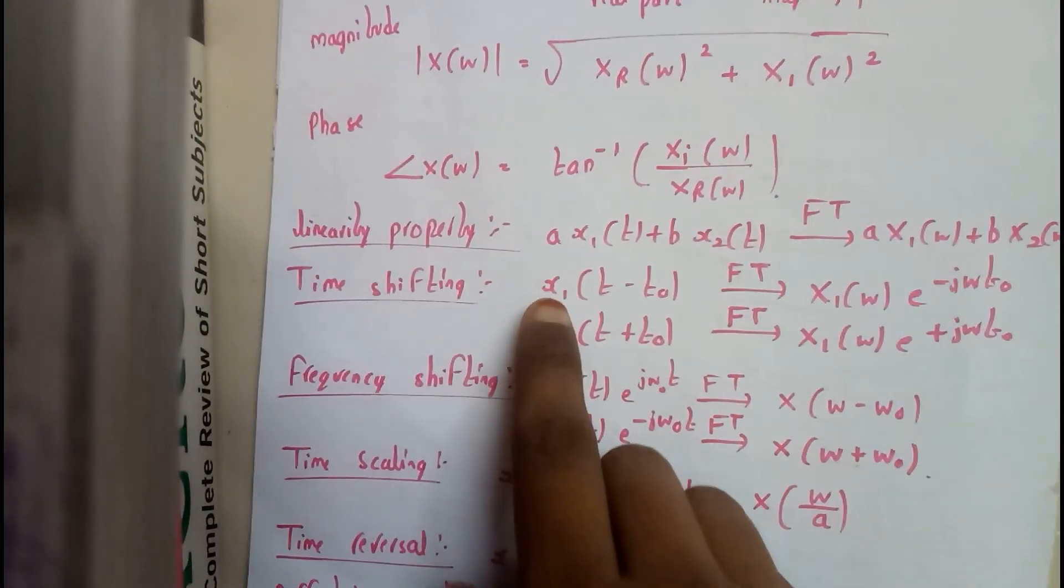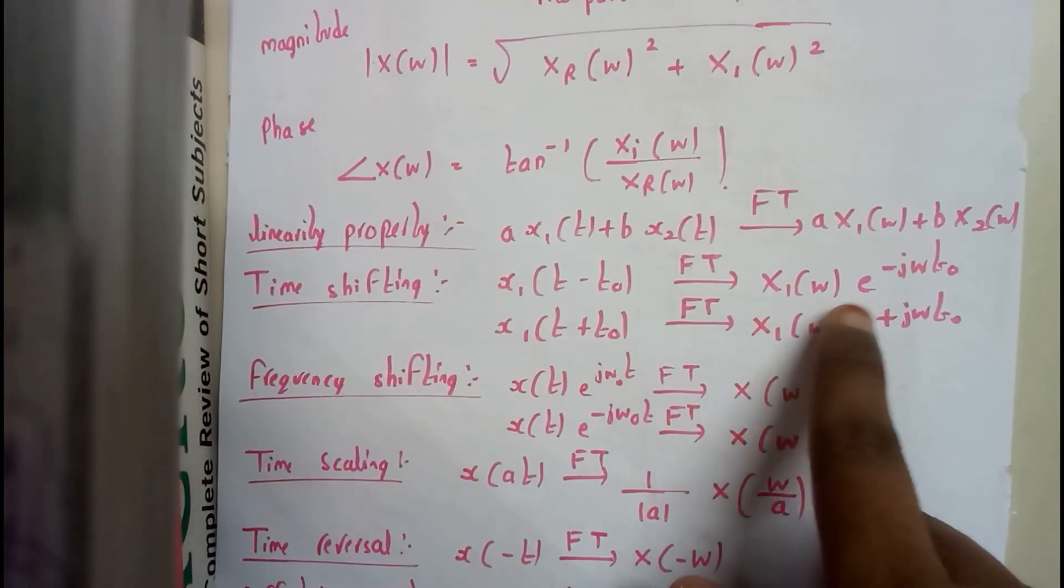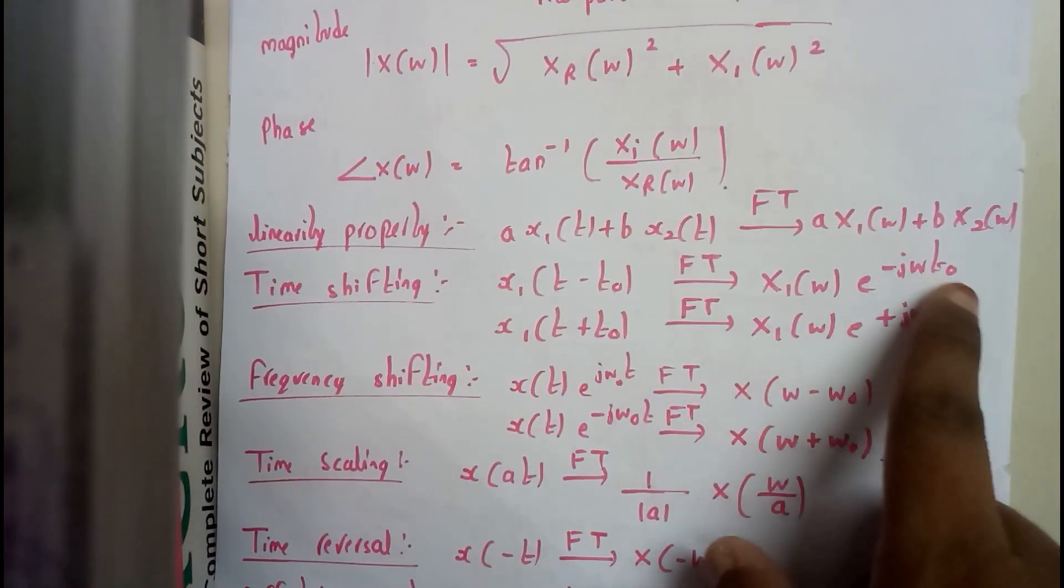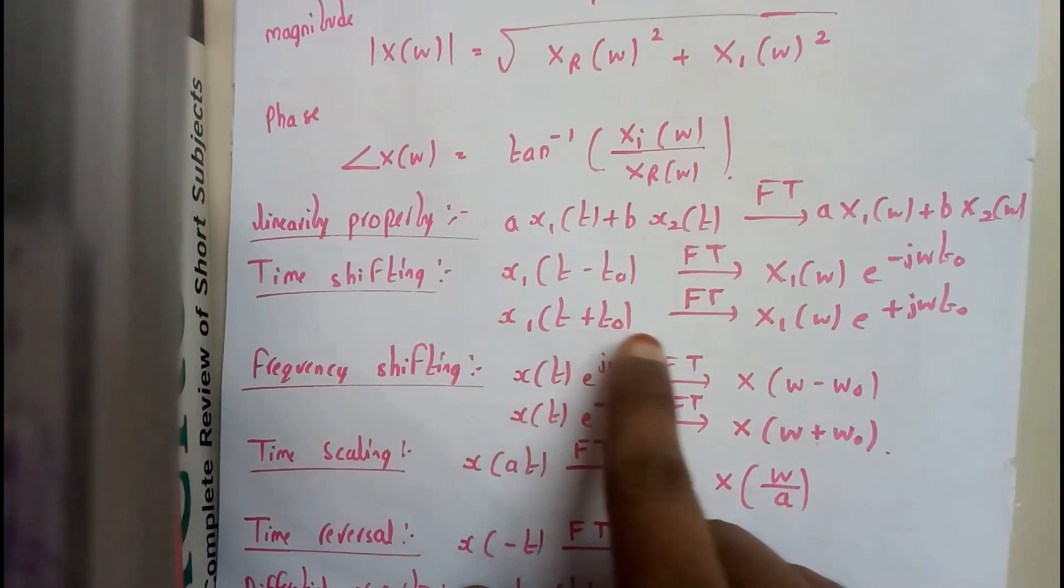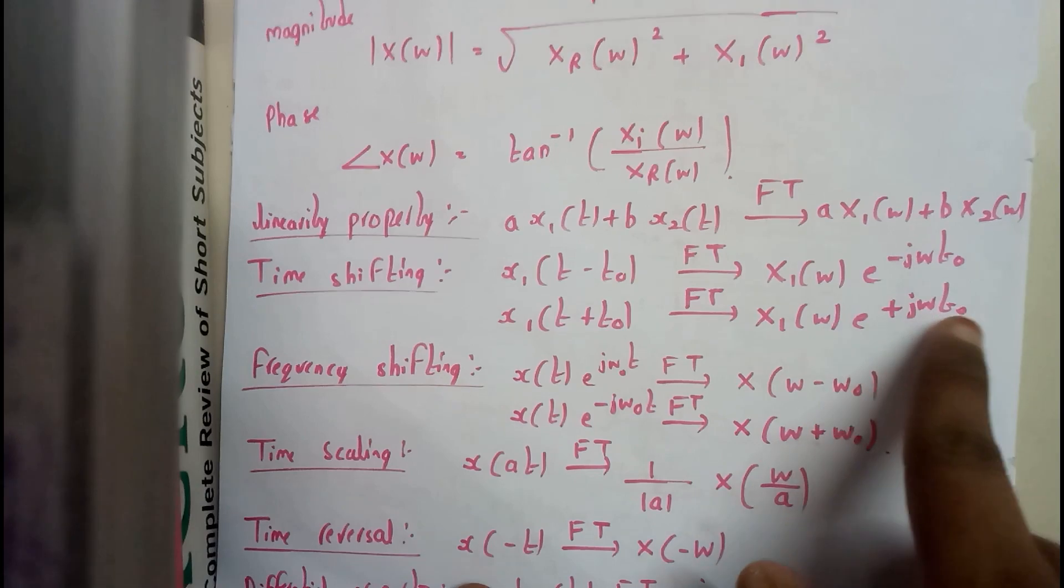Similarly time shifting property x1(t minus t naught). For that if we apply Fourier transform we get x1(ω) e power minus j omega t naught. x1(t plus t naught), if we apply Fourier transform for that we get x1(ω) e to the power of plus j omega t naught.